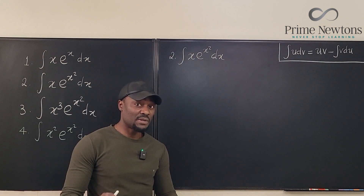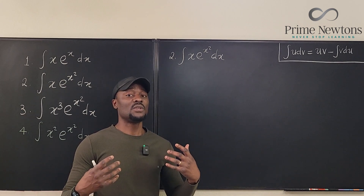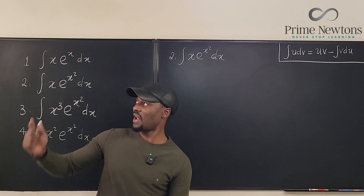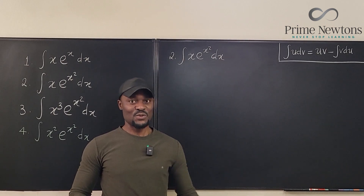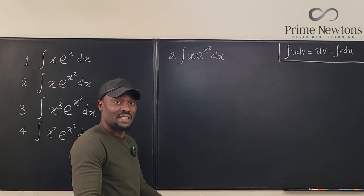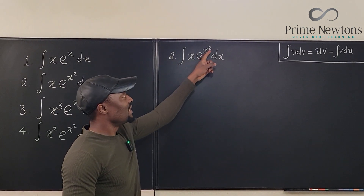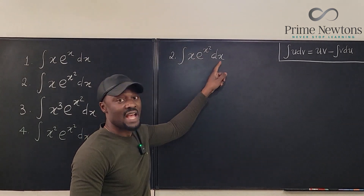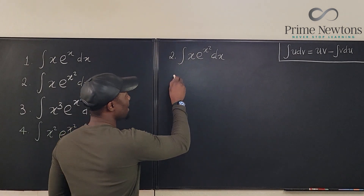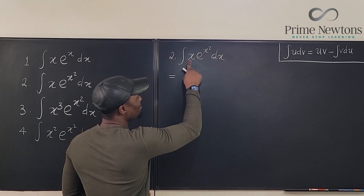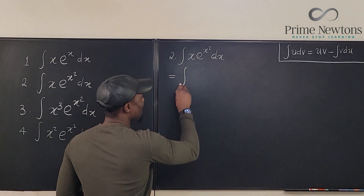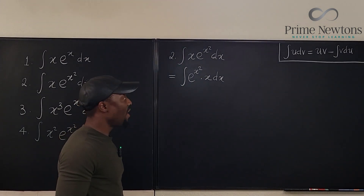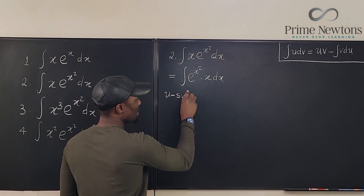Problem two is a typical example teachers give when teaching u-substitution — it's calculus 1 level difficulty. Here we notice that the derivative of x² is x, so with a u-substitution we can eliminate x dx. I'll rewrite the integrand as e^(x²) times x dx so I can apply the u-substitution strategy.